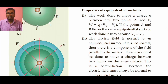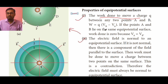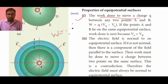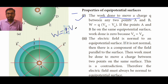Now we come to equipotential surface properties. Only two properties are given here, and I hope you will understand them very well because of our previous definition of equipotential surface. Let us discuss: the work done to move a charge Q between any two points A and B is given by W = Q(VB − VA). From our previous class we know that work done W equals Q into potential V, where this potential is from infinity to a point — so it is given by VF minus VI, i.e., change in potential ΔV equals V final minus V initial.